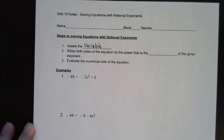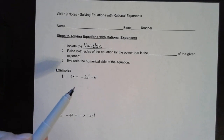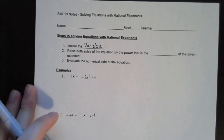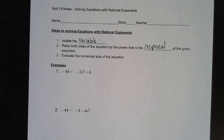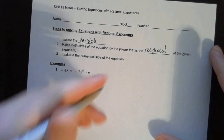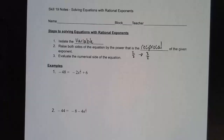First thing we want to do is to isolate the variable. This will look very similar to how we've solved equations before. Then we want to raise both sides of the equation by the power that is the reciprocal of the given exponent. Remember the reciprocal is when we inverse the fraction. So if I have two-thirds, the reciprocal is three-halves. And then the last step is to evaluate the numerical side of the equation.